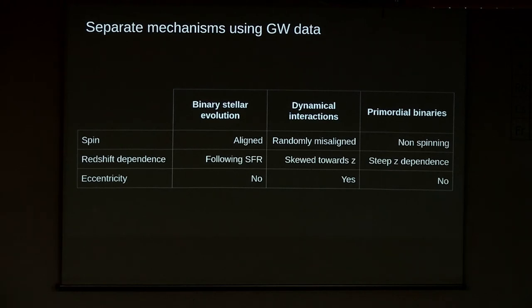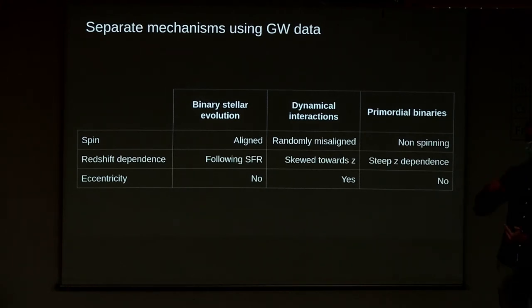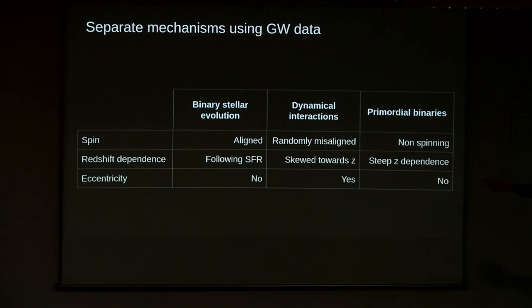What does allow us to disentangle the origin is eccentricity. If we see eccentricity in the orbit, it necessarily comes from dynamical interactions. Let me say it again: if we see eccentricity in a gravitational wave signal, then that signal has had to come from dynamical interactions. This is a key point in this study.